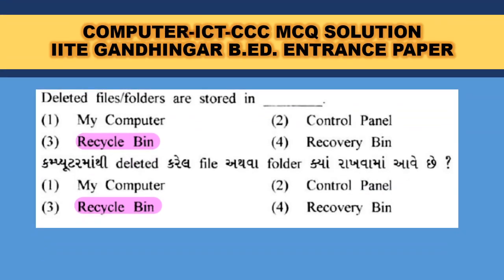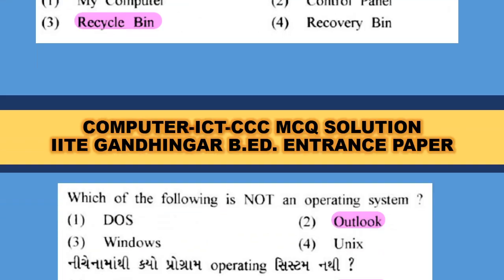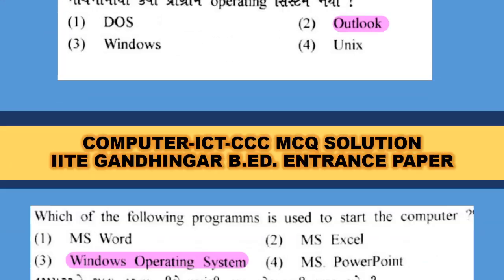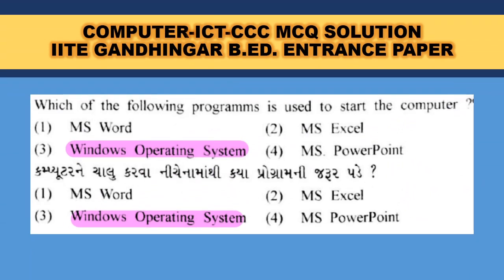Deleted files and photos are stored in the Recycle Bin. Which of the following is not an operating system? DOS, Windows, and Unix are operating systems — Outlook is an email management application software, so Outlook is the correct answer.